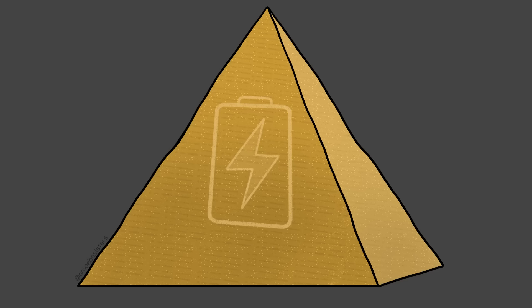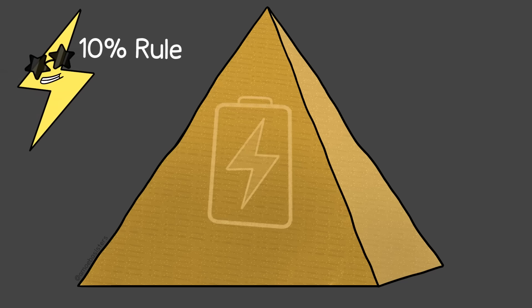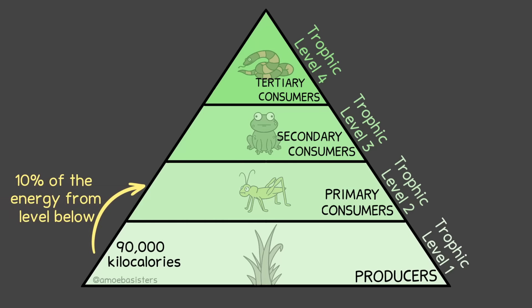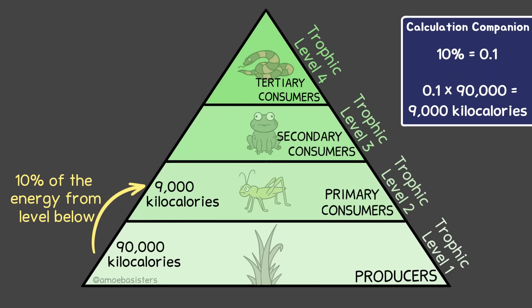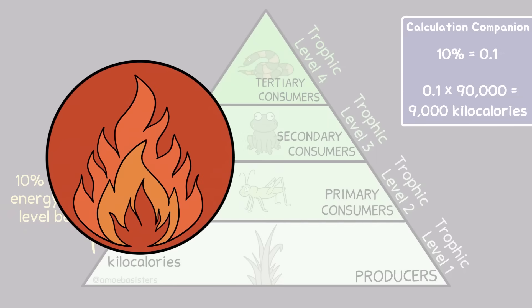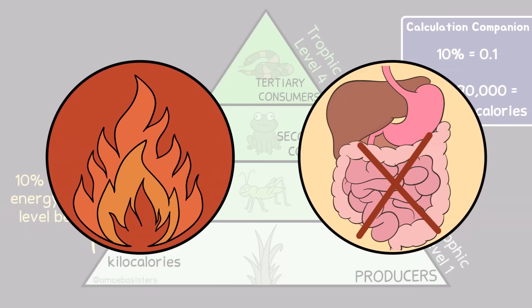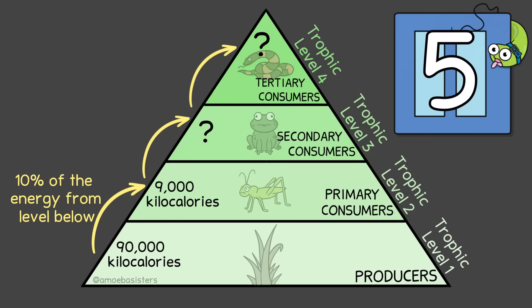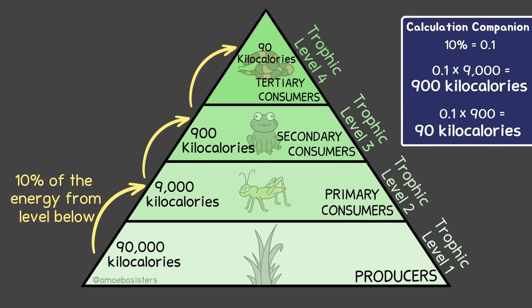What makes this an energy pyramid is that it represents the approximate amount of energy at each level, and it follows the 10% rule. If the base level had 90,000 kilocalories, then primary consumers at trophic level 2 would have approximately 10% of that — 9,000 kilocalories. Most energy is lost as heat during metabolic processes, and some remains in undigested materials. Following the 10% rule, trophic level 3 would have approximately 900 kilocalories and trophic level 4 about 90 kilocalories.